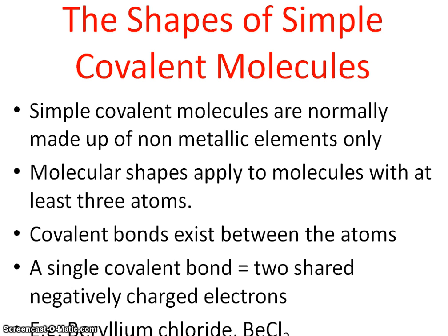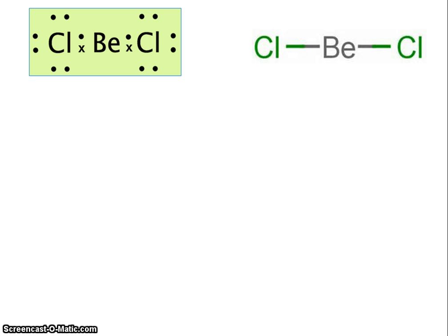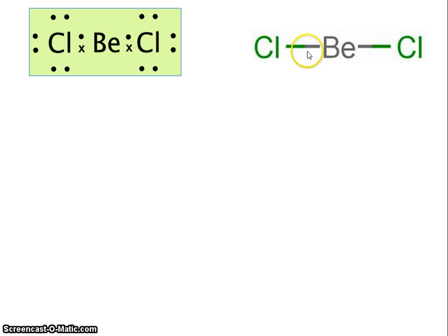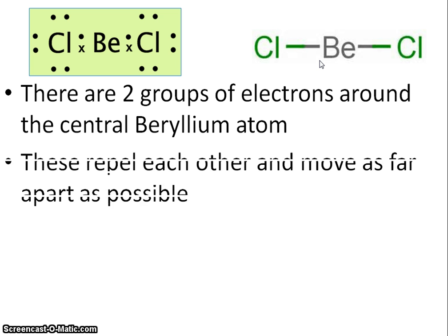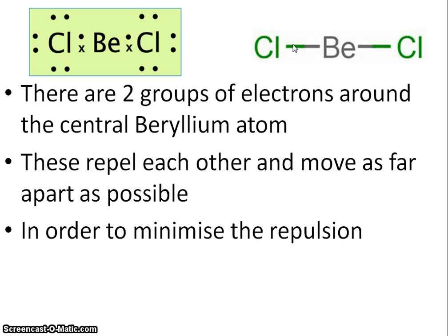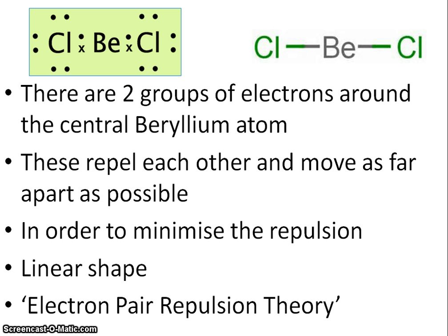Let's take a look at the first molecule: beryllium chloride. Don't worry about beryllium only having four electrons in the outer shell. We're looking at beryllium as the central atom with just two groups of electrons. A single covalent bond counts as one group of electrons, so two single covalent bonds around beryllium gives two groups. The electrons, being negatively charged, repel each other and move as far away from each other as possible.